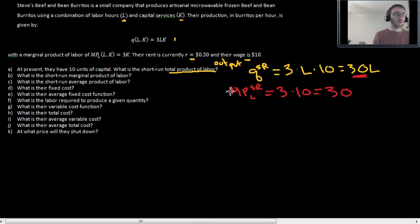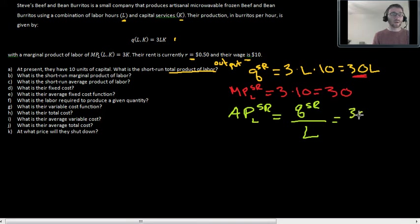What's the average product of labor? The average product of labor, the APL in the short-run? Well, the average product of labor is going to be the output quantity, again in the short-run now, per unit of labor, so divided by L. So here we have 30L divided by L equal to 30. And so we have a marginal product equal to our average product in the short-run here for this particular set of functions. And there we go. That's our A through C, by the way.